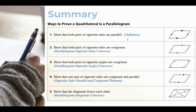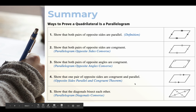Number one: if you can prove that a quadrilateral has both pairs of opposite sides parallel, then by definition it must be a parallelogram. Number two is the converse of the parallelogram opposite sides theorem. That theorem says if you have a parallelogram, then both pairs of opposite sides are congruent. So you just flip the conclusion and the hypothesis for the converse: if a quadrilateral has both pairs of opposite sides congruent, then you can conclude it must be a parallelogram. The only one that's brand new is number four.